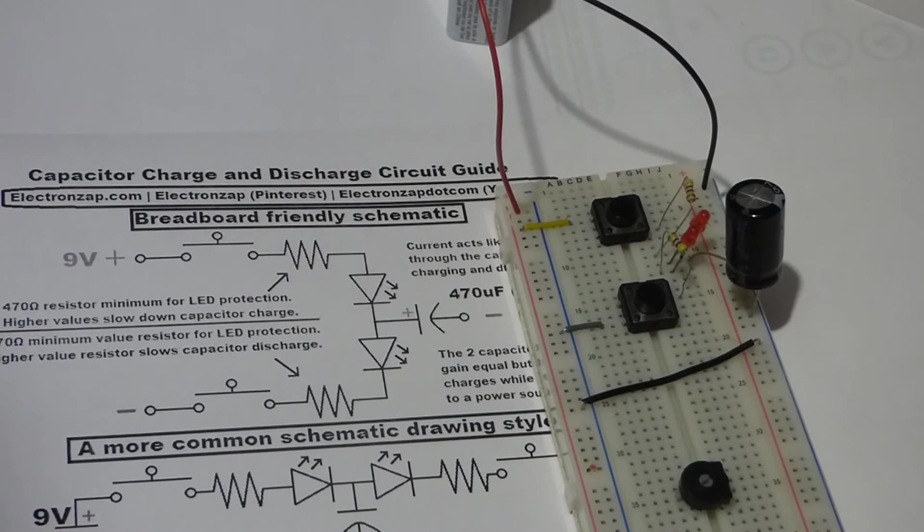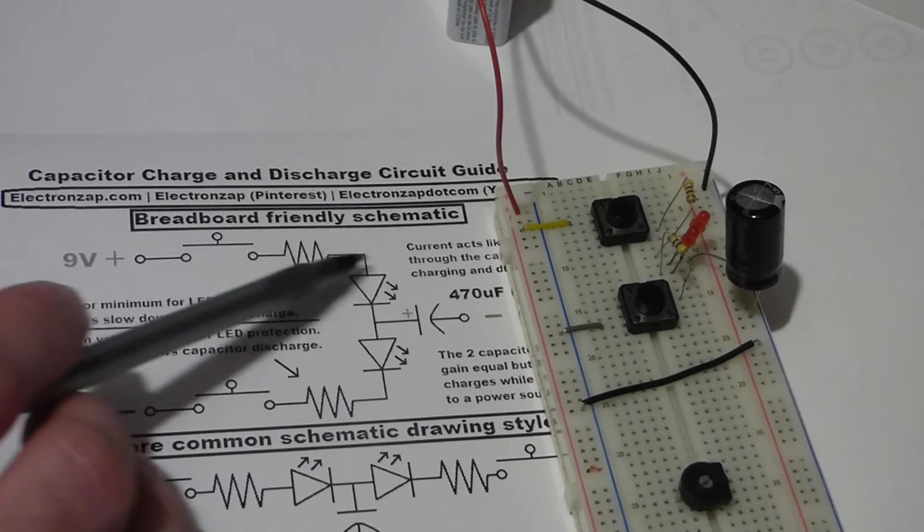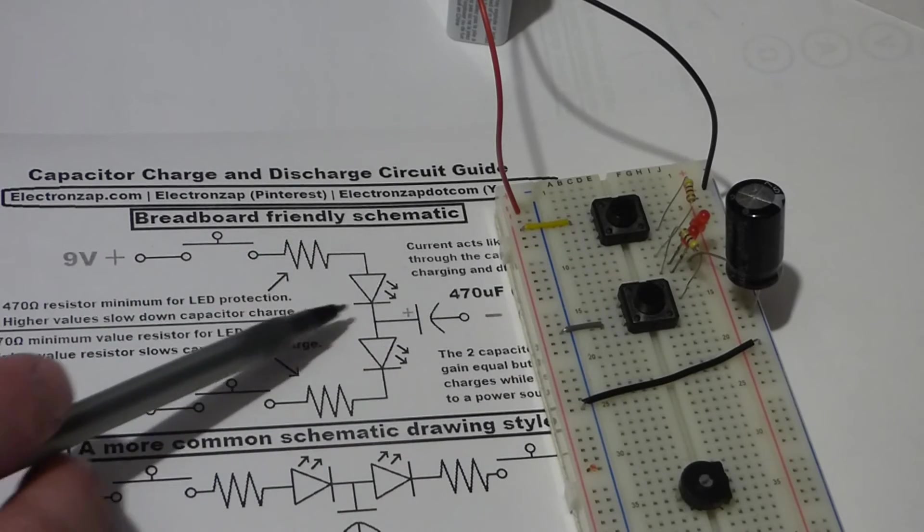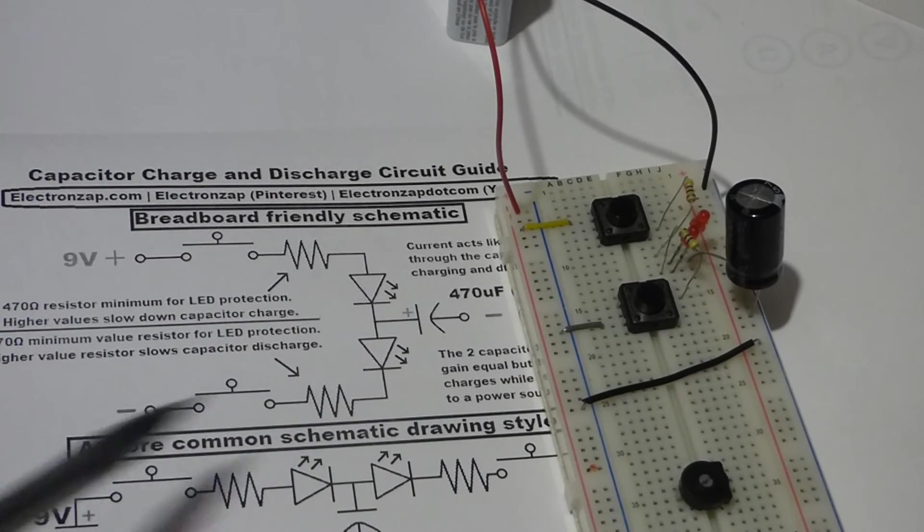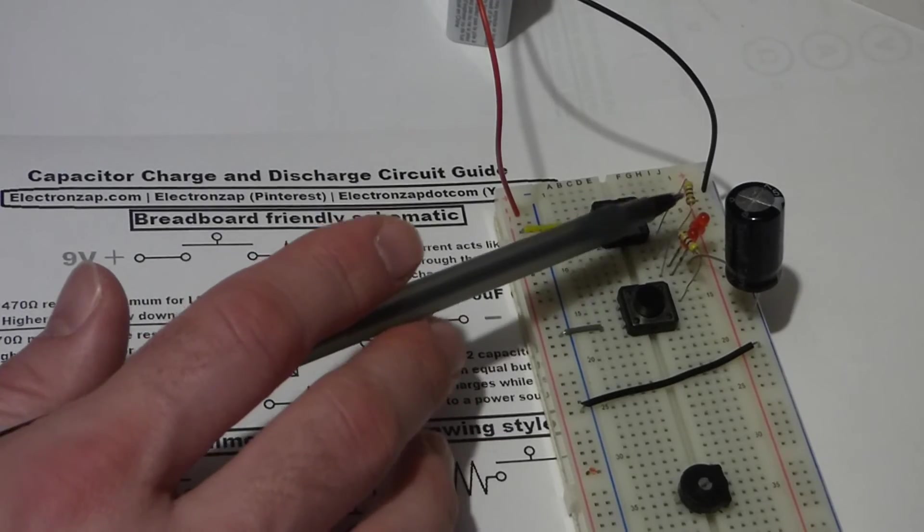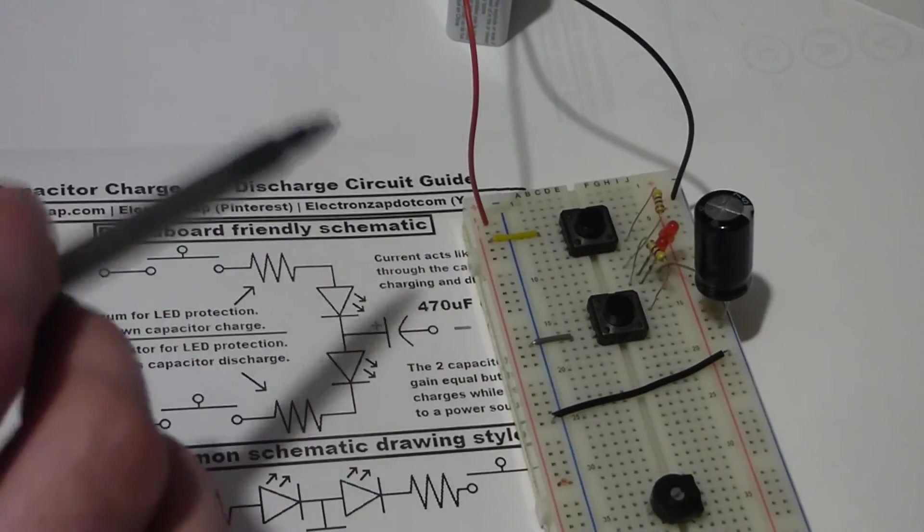But if I wouldn't have checked that I put it in right, you know I wouldn't have worked right the first time. I would have had to troubleshoot, which is no big deal either. But the second time I shot that scene where I insert the resistor, I put it in the right spot.